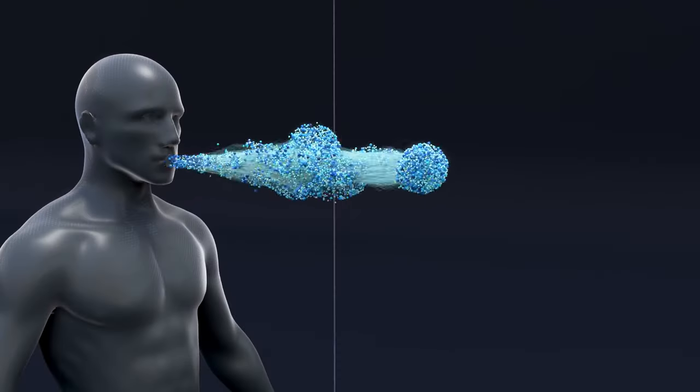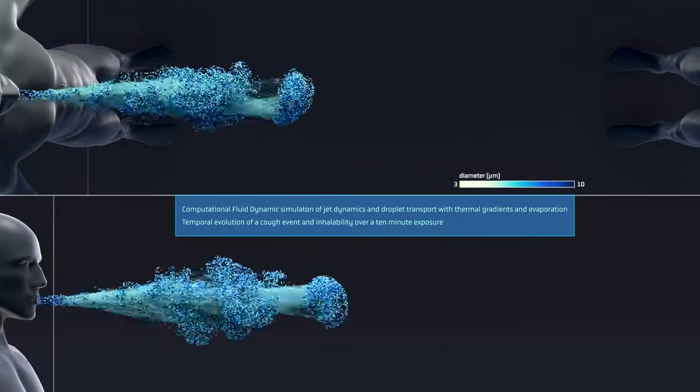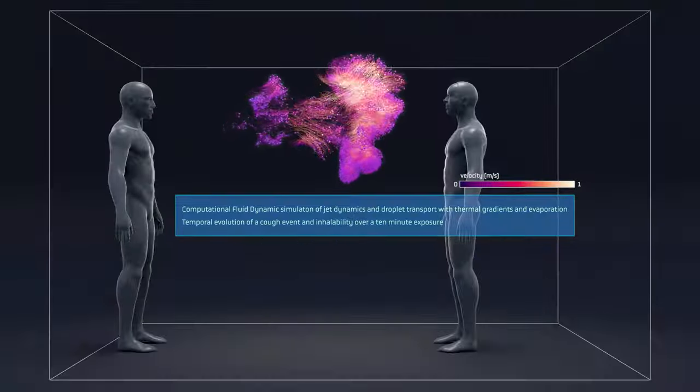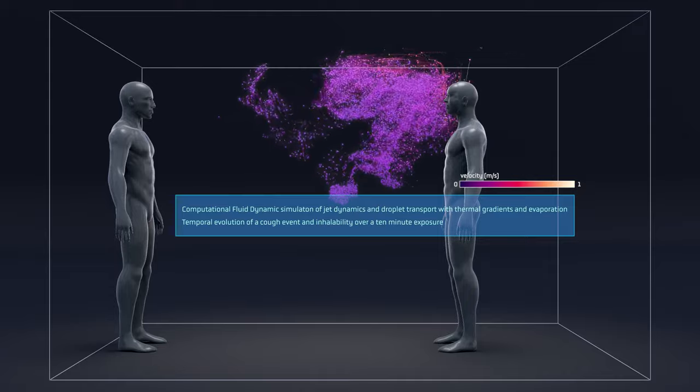Using supercomputers, we can look at the spread of the virus as it travels through the air from one person to another. And study the effectiveness of masks, air conditioning, and social distancing.